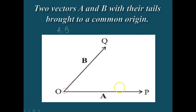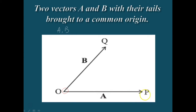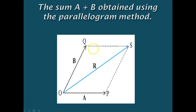Then we draw a line from the head of a parallel to b, and another line from the head of b parallel to a, so that we form a complete parallelogram given by oqsp. The parallelogram oqsp is completed after drawing these parallel lines.